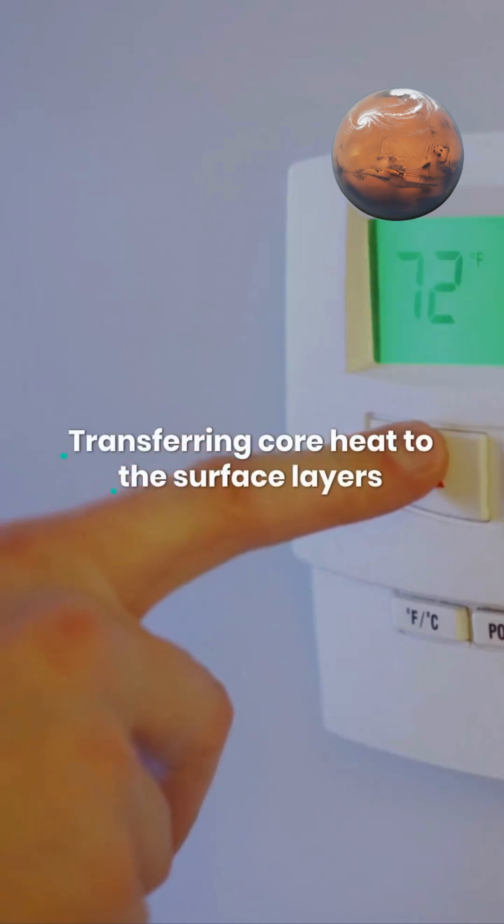Convection currents carry hot plasma upward while cooler material sinks, similar to boiling water, efficiently transferring core heat to the surface layers.